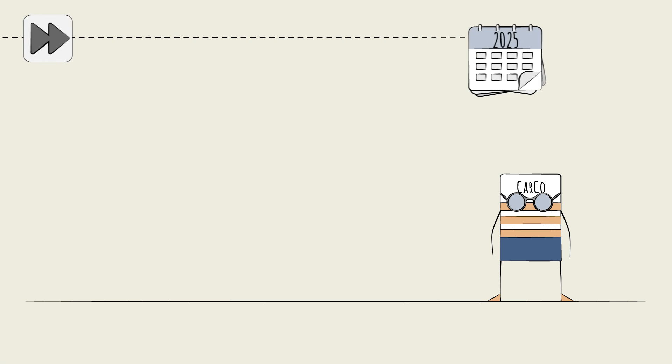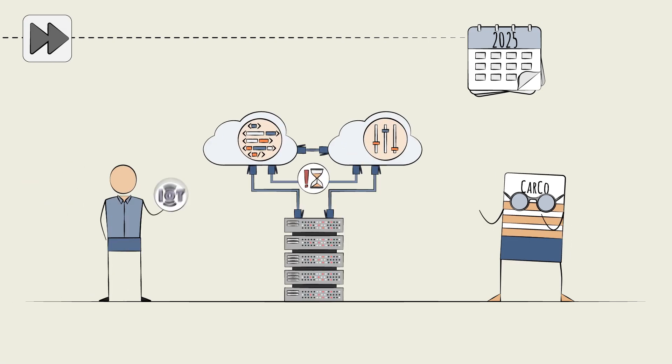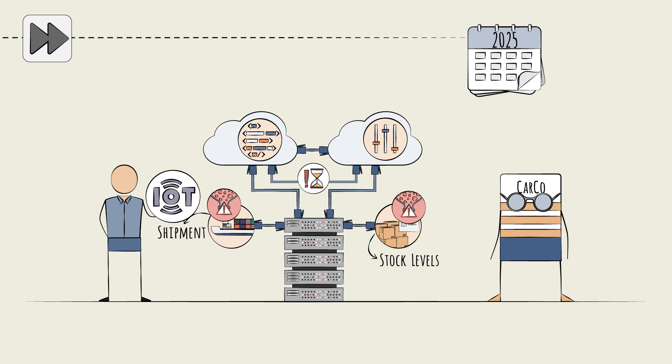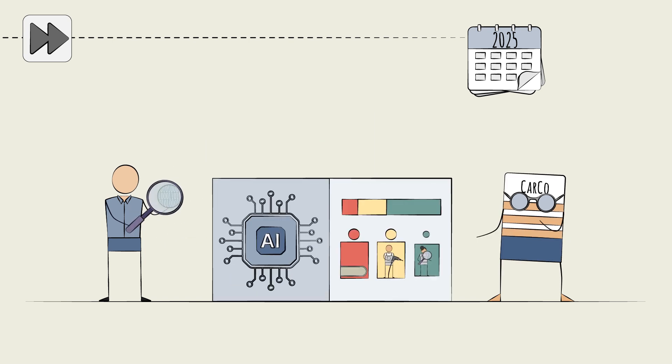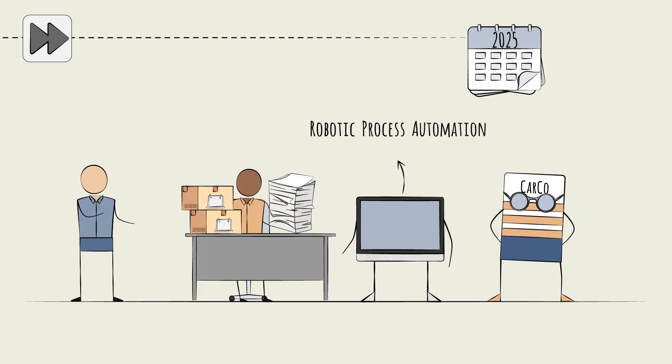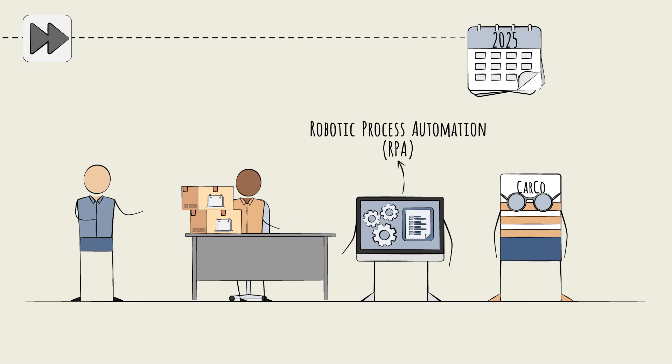Fast forward to 2025. The consultants bring in cutting-edge tech. IoT sensors are deployed across the entire supply chain, monitoring stock levels, tracking shipments, and flagging potential bottlenecks in real-time. AI-driven predictive analytics help forecast demand and optimize reordering cycles. Robotic process automation, RPA, streamlines workflows, handling mundane tasks like order processing.